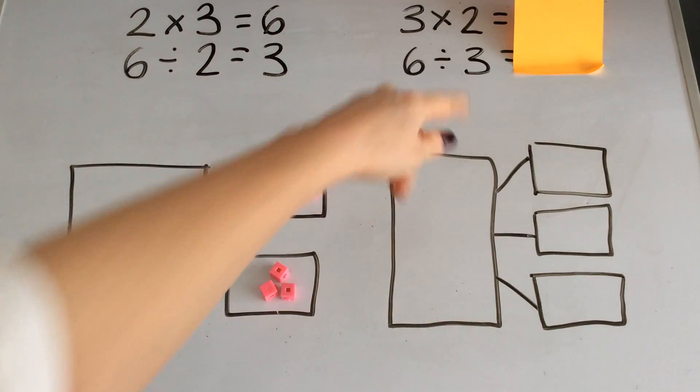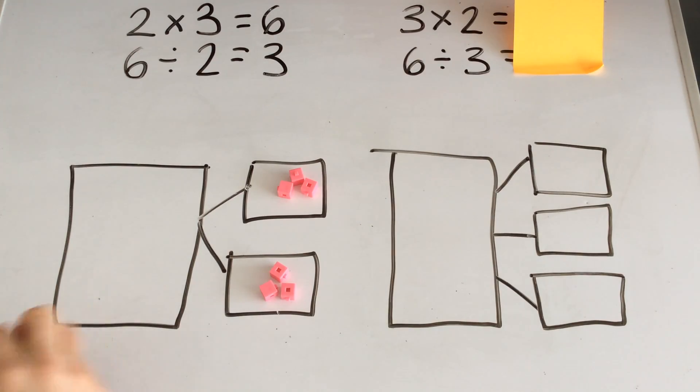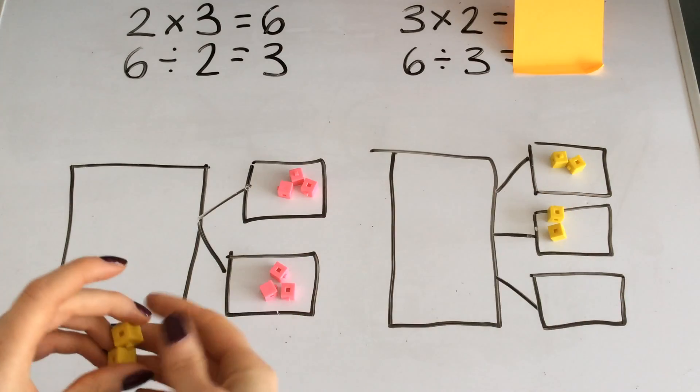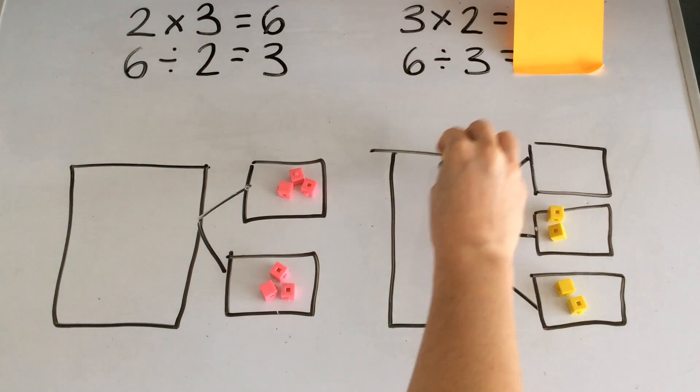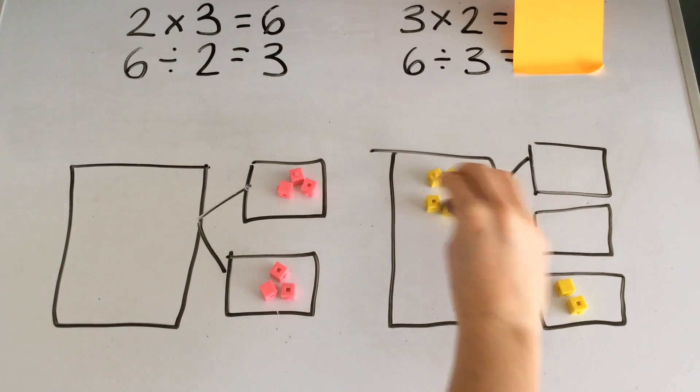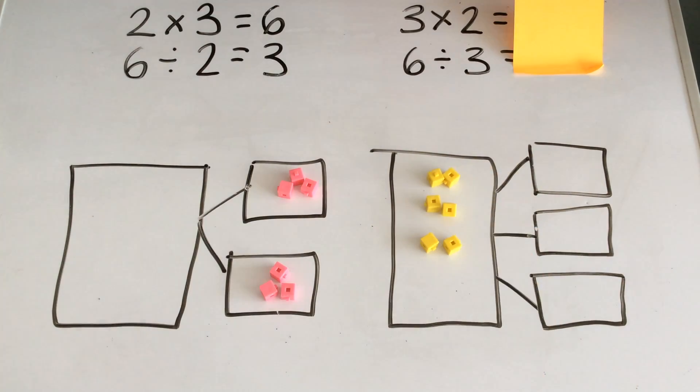If I wanted to find 3 multiplied by 2, I'm going to have 3 groups and each group is going to have a value of 2. I know that 2 and 2 and 2 make 6.